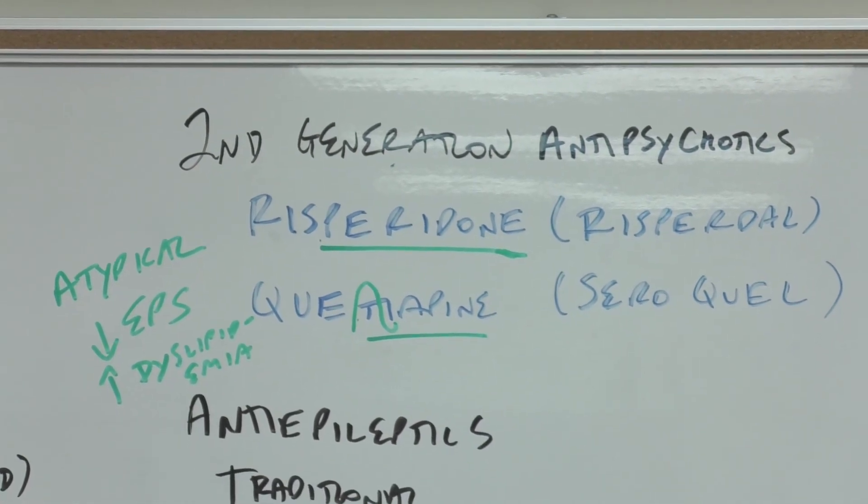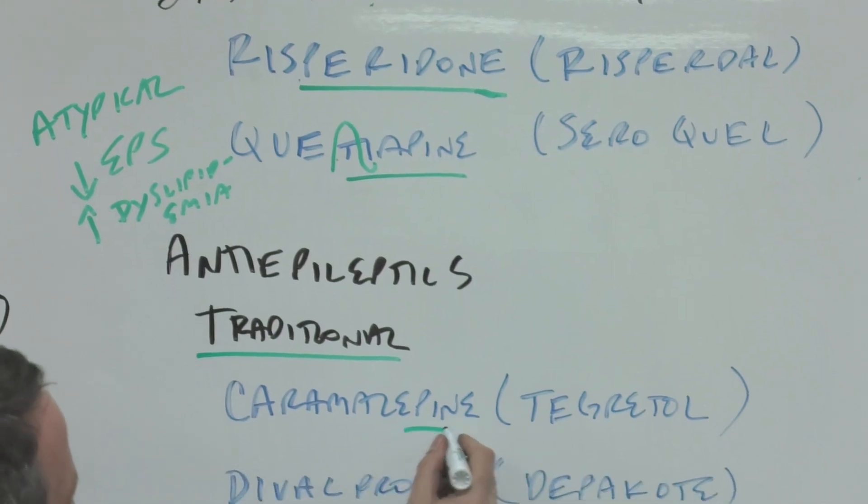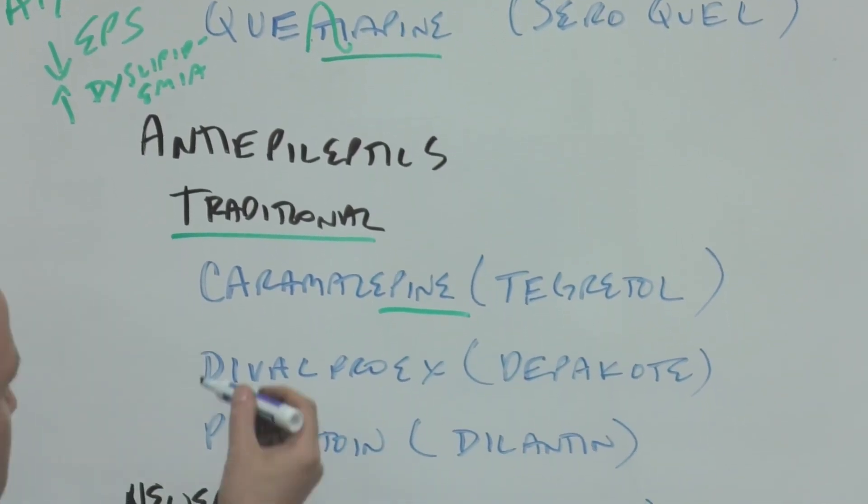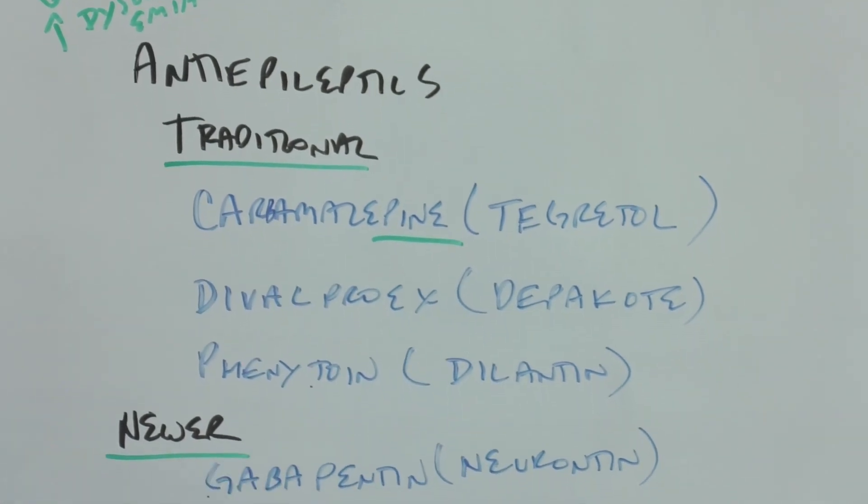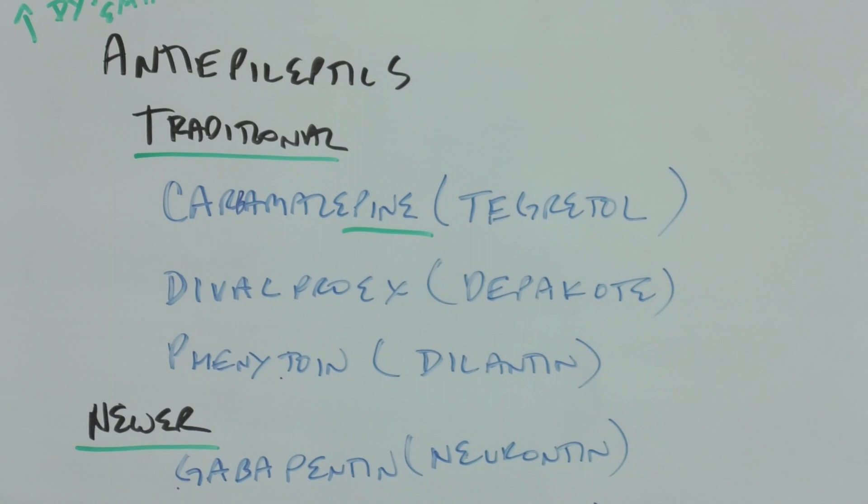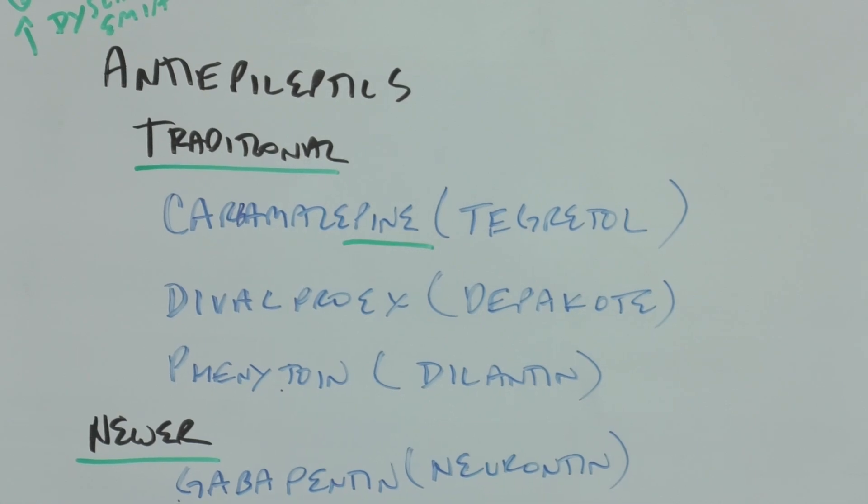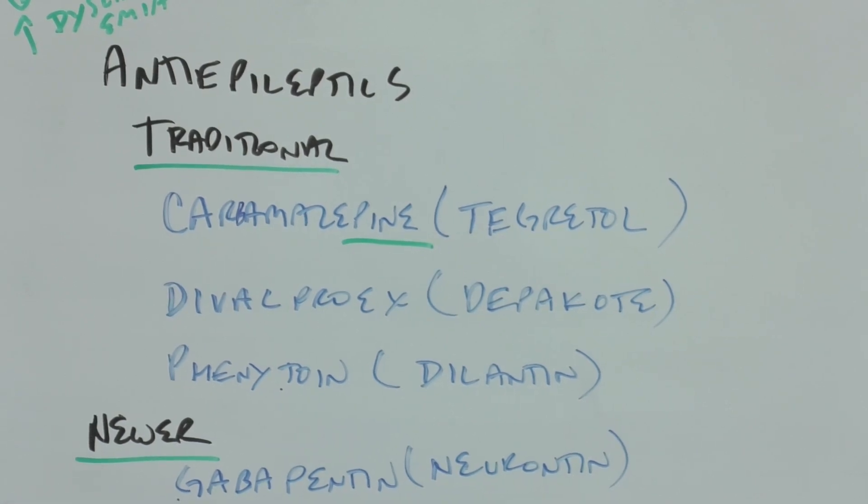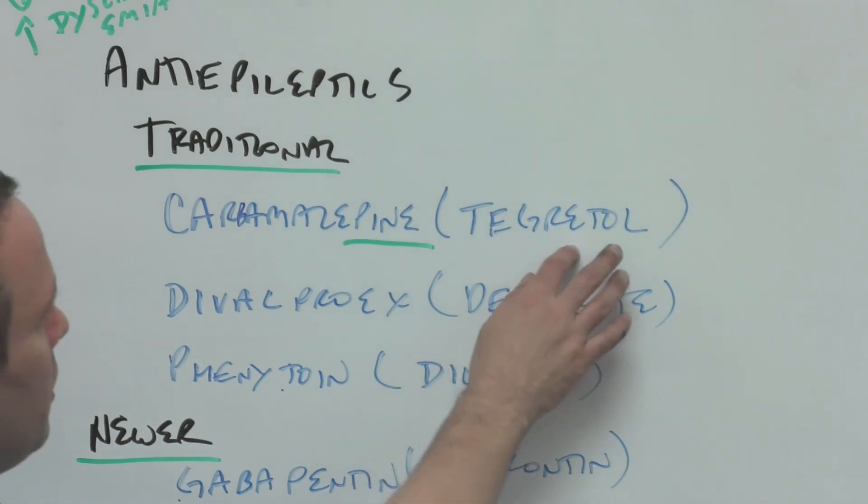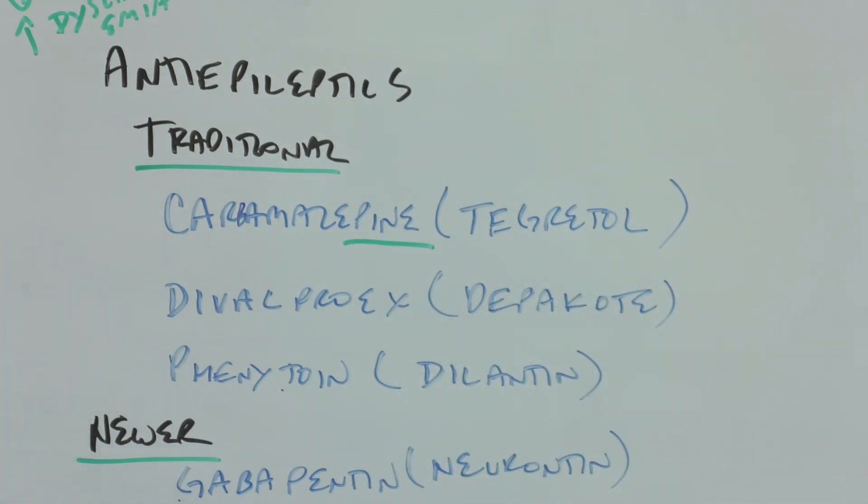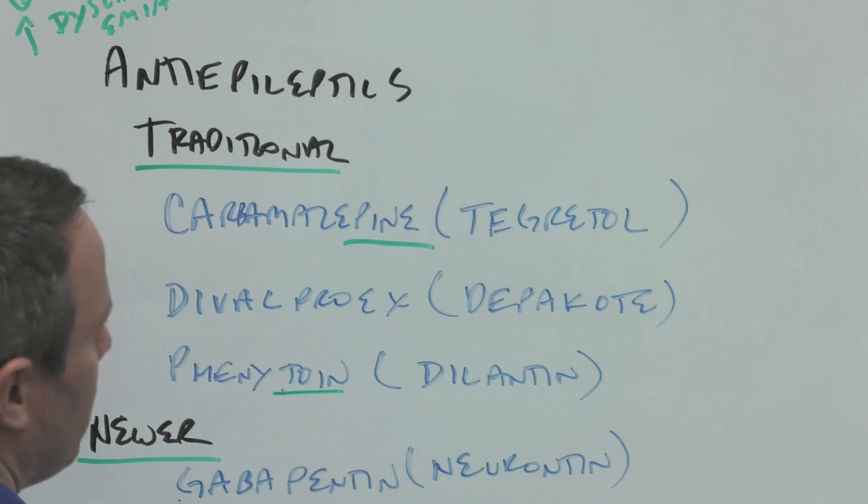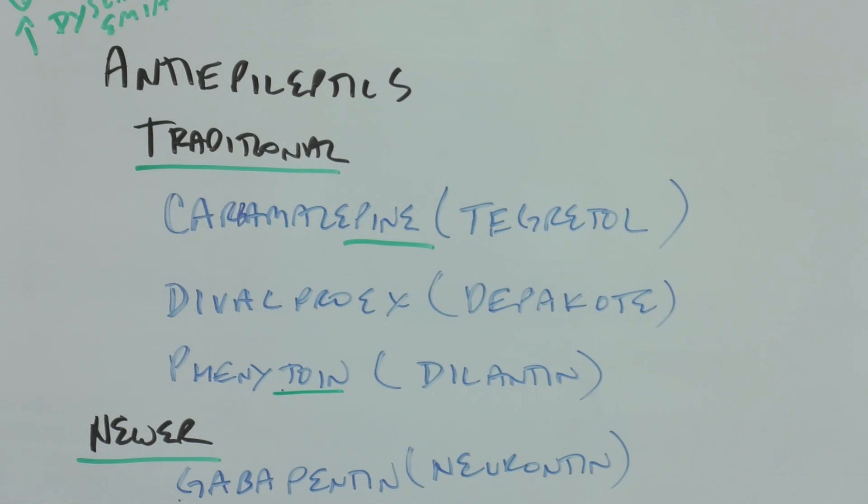Anti-epileptics we break down into traditional versus newer. We've got carbamazepine - the pene just means that we have some kind of tricyclic molecule. The way to remember it is that you curb the convulsions or you control them. Tegretol - you can see the T, R, O, L that could be from the word control. Divalproex is Depakote, the second traditional one. Phenytoin has the toin T-O-I-N stem, and this is Dilantin.